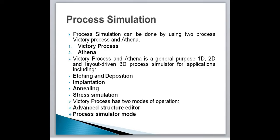Process simulation can be done using two tools: Victory Process and Athena. Victory Process is a general-purpose 1D, 2D, and 3D process simulator for applications including etching and deposition, implantation, annealing, and stress simulation. Etching and deposition is done with a geometrical model for fast structured prototyping and a physical model for detailed process step analysis. Implantation is done with a very fast analytical model and a very accurate Monte Carlo model, and annealing is done with a comprehensive set of doping diffusion models.